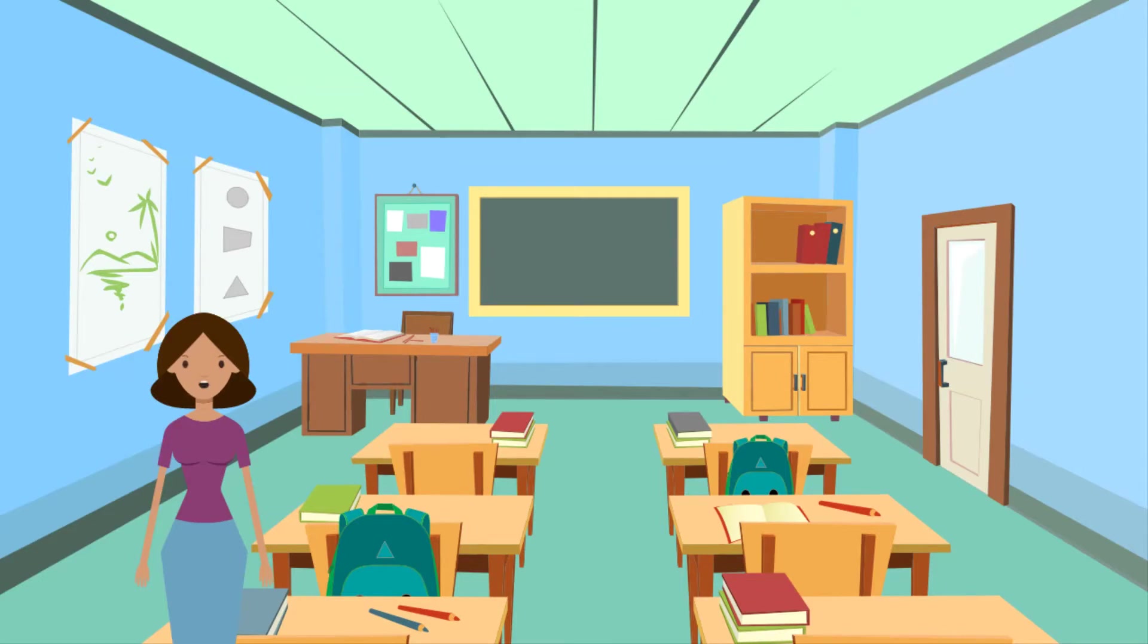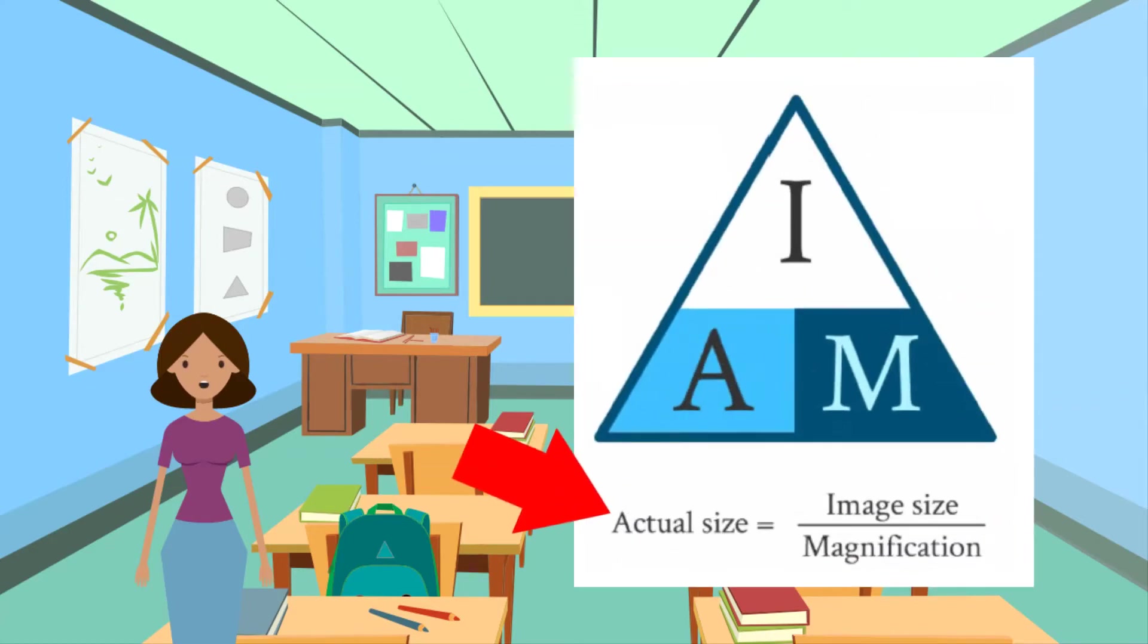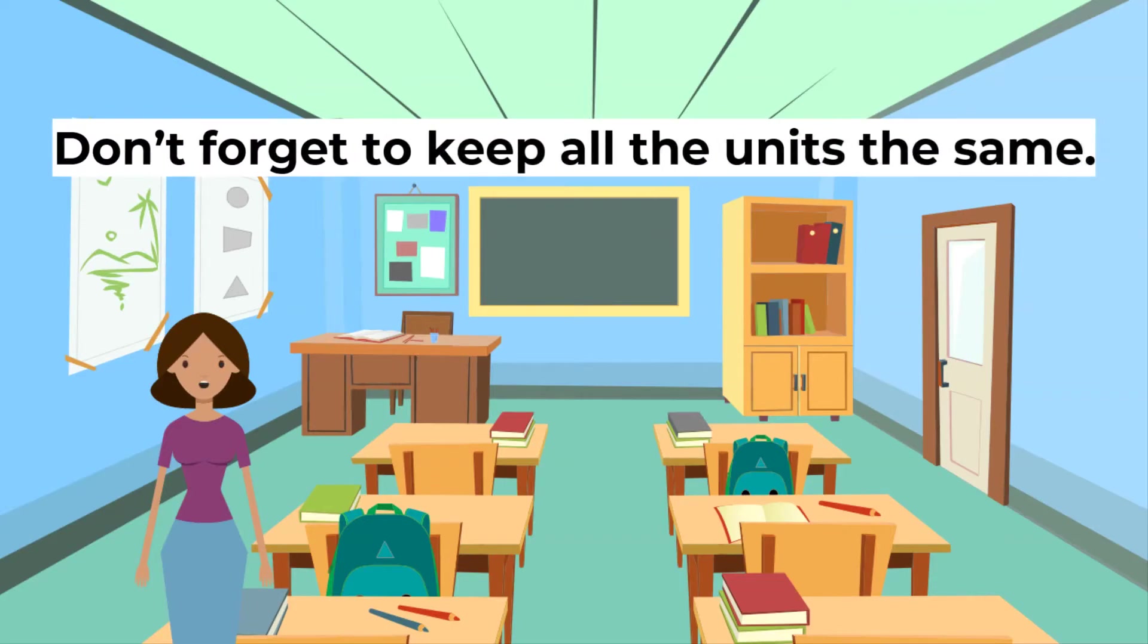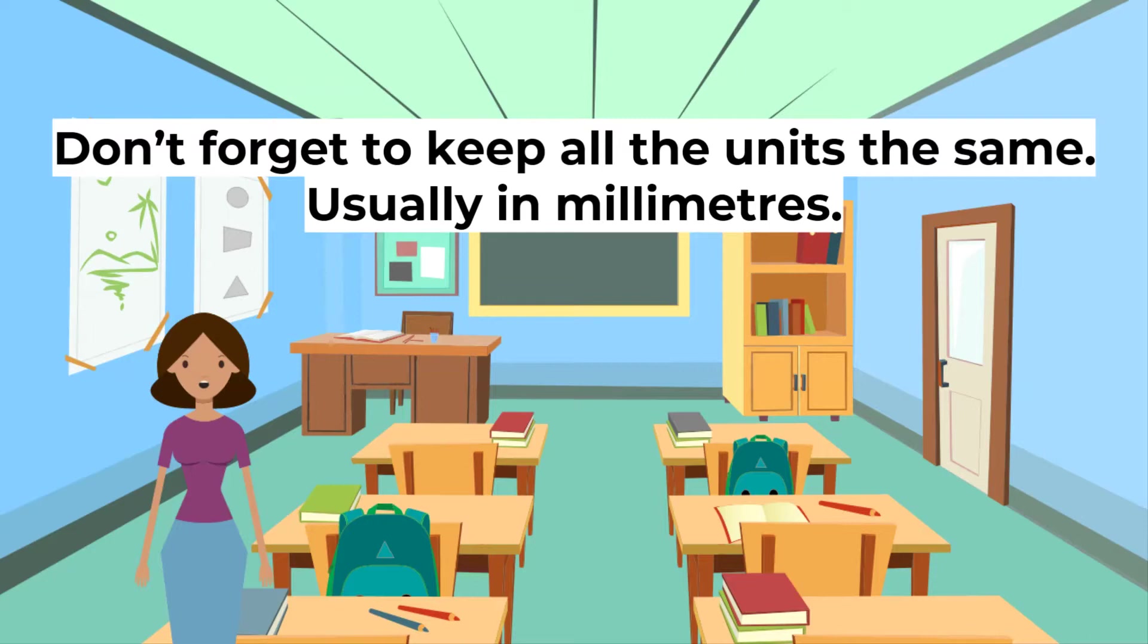You also need to know how to calculate the magnification and the size of specimens. Use this formula to find whatever you need. A stands for Actual Size, I stands for Image Size, M stands for Magnification. This diagram may help you remember. Always remember to keep all the units the same, usually this will be in millimeters. But even if it's not in millimeters, maybe it is in micrometers, as long as the units are all the same, it doesn't matter, you can always convert.